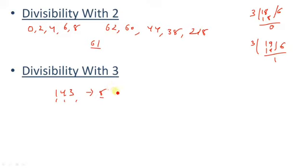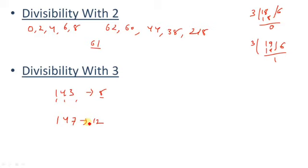Suppose I take another example: 147. The sum of the digits is 1 + 4 + 7 = 12. Since 12 is divisible by 3, so 147 is divisible by 3. This is how you test for divisibility by 3 — first add all the digits, then if the result is divisible by 3, the number will be divisible by 3.